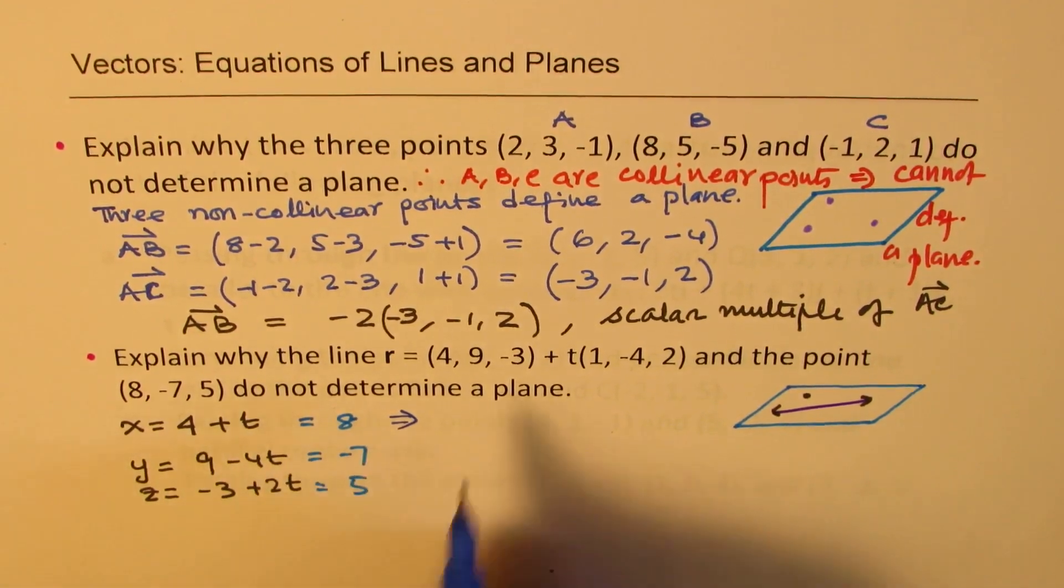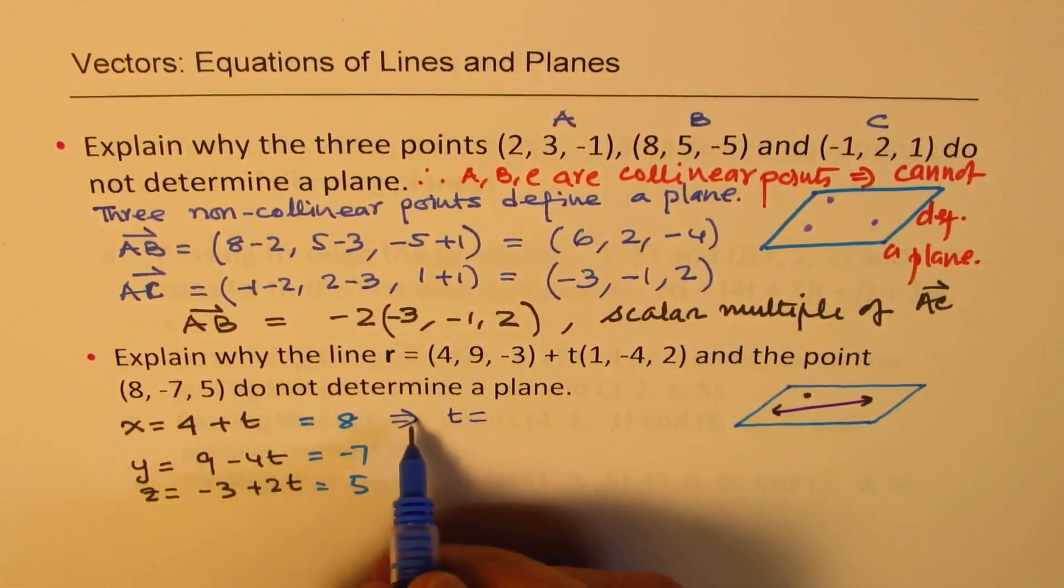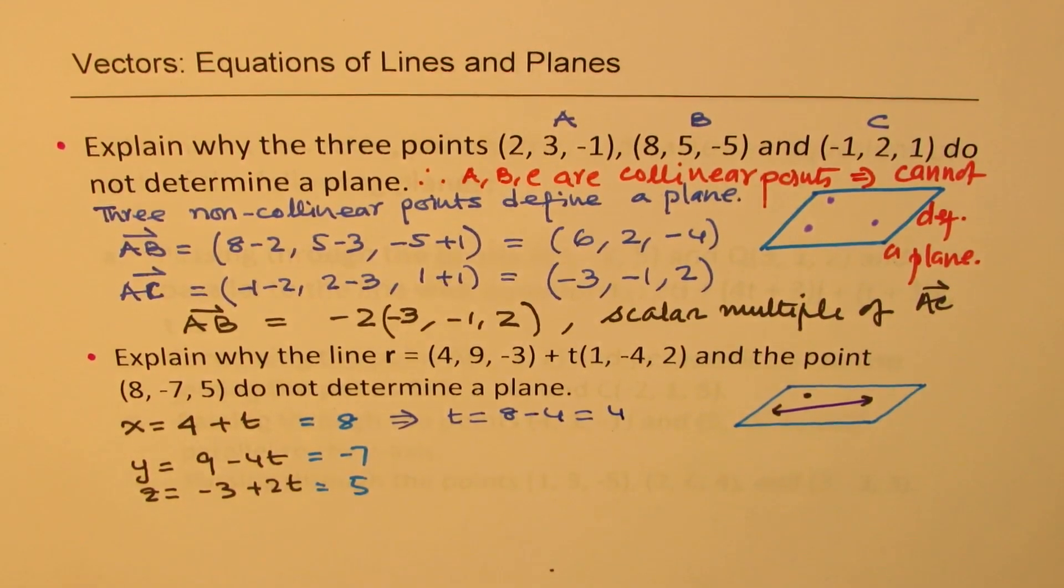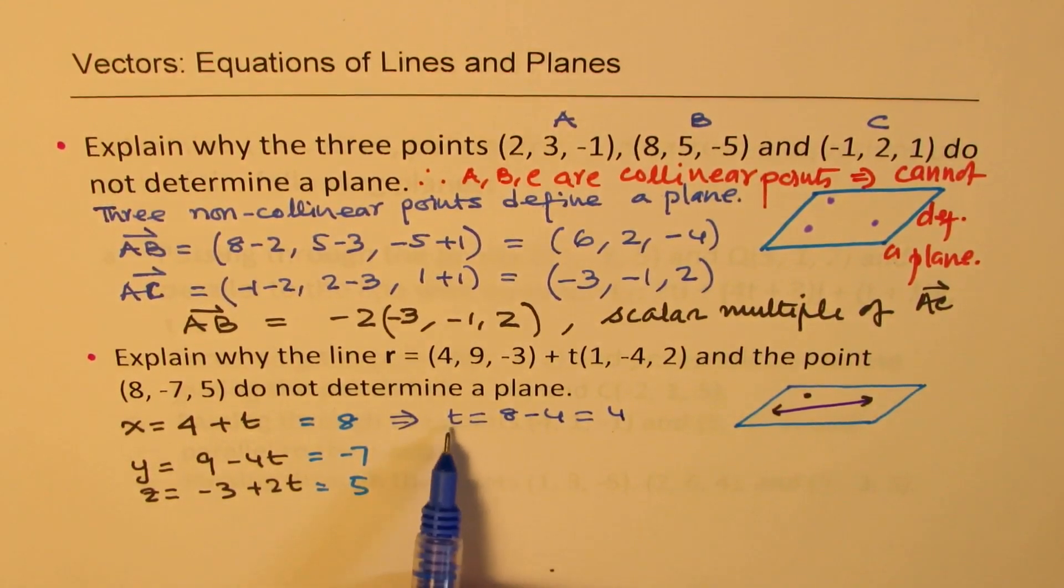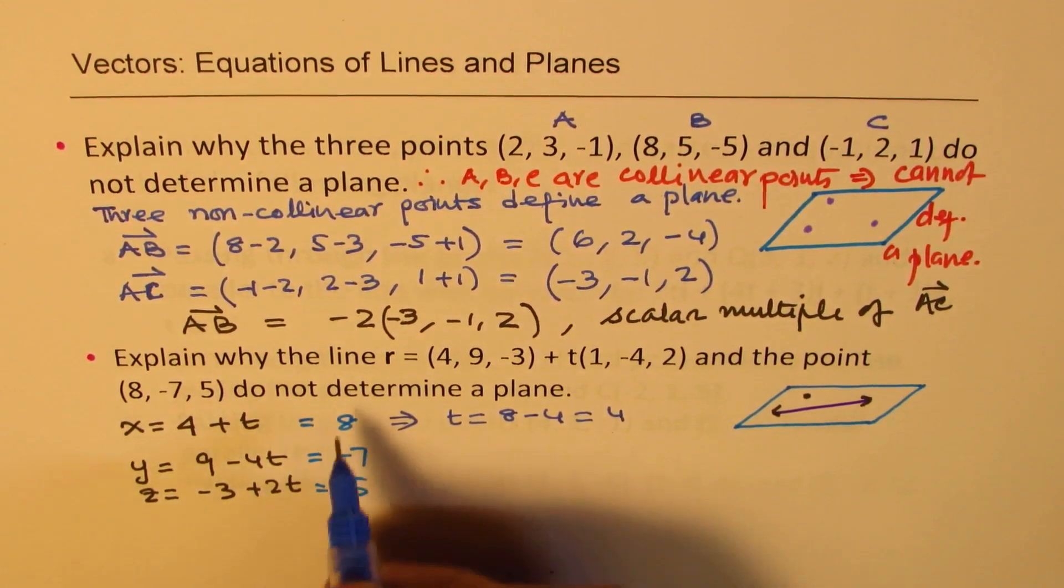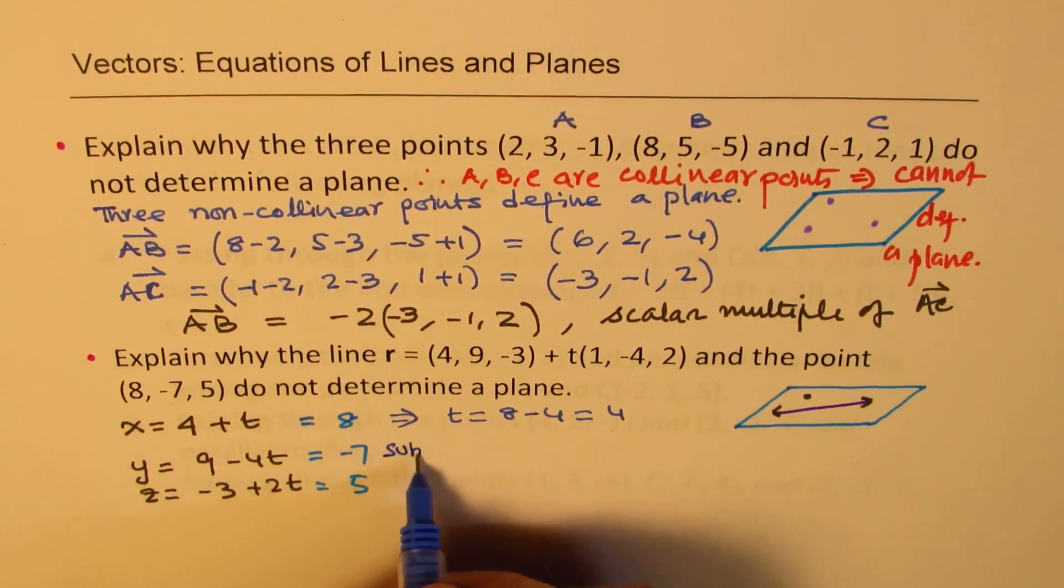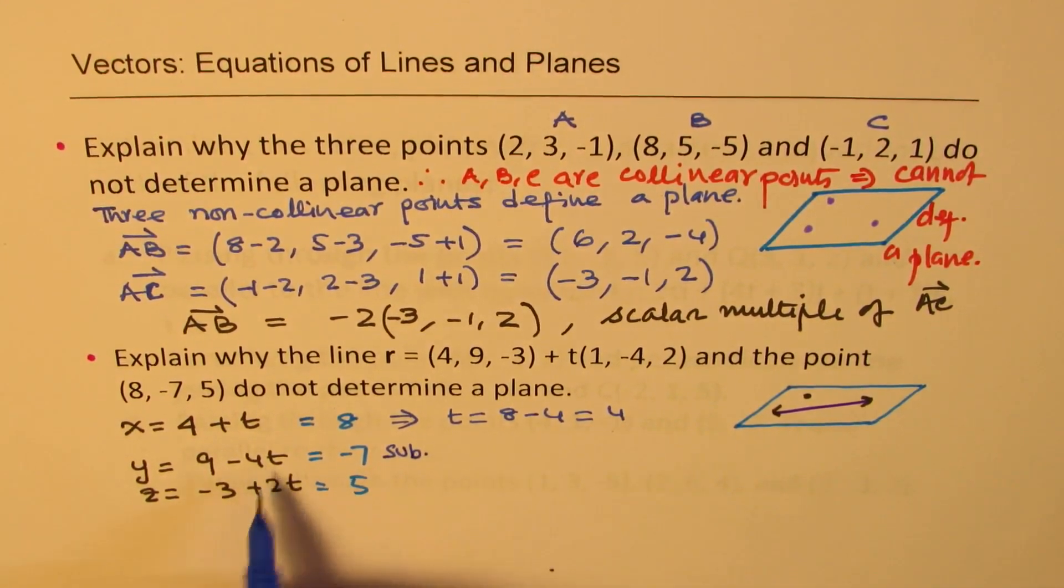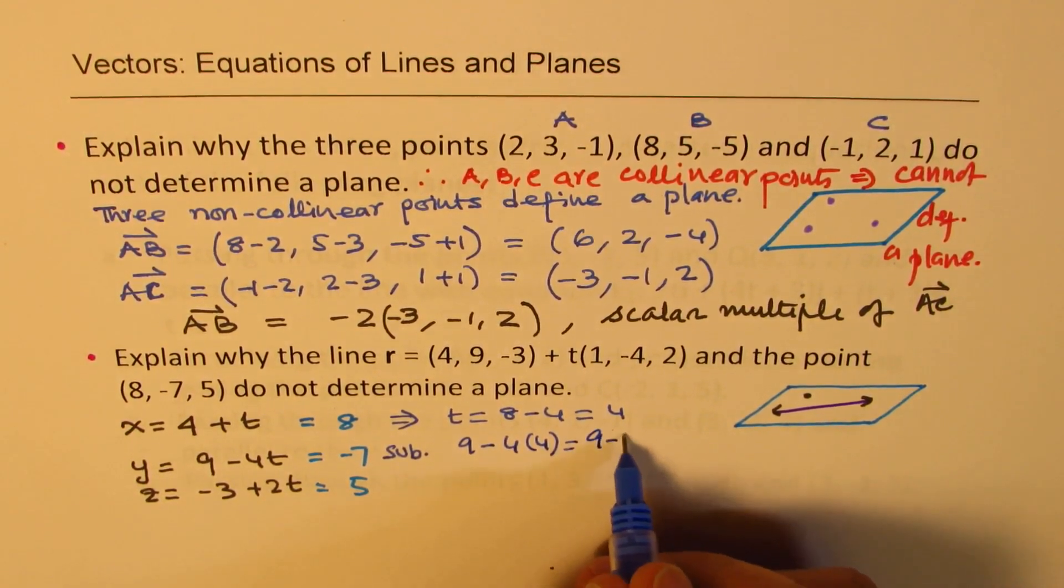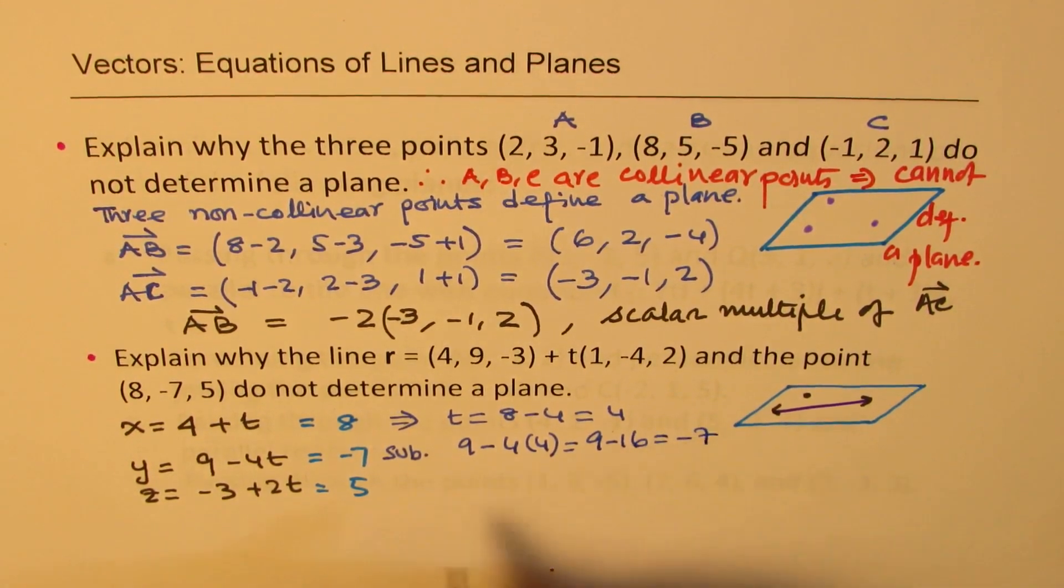Now we are trying to solve this equation. If 4 + t is equals to 8, then t is equal to what? t is 8 - 4 which is equal to 4. So we got a value of t as 4. Now we need to check if substituting 4 gives us -7 for y and for z it gives us 5 or not. So let's substitute. So we are going to sub here. So sub 4 for t, we get what? 9 - 4 times 4 which is 9 - 16 which is indeed -7.